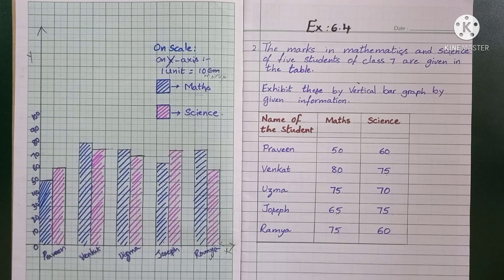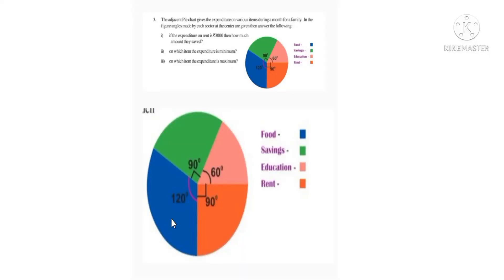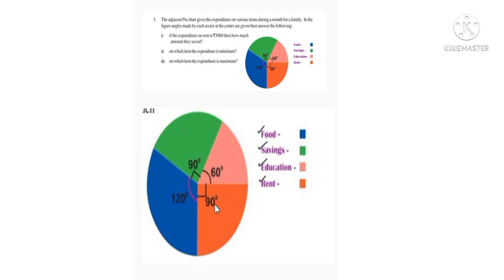Question number 3: the adjacent pie chart gives the expenditure on various items during a month for a family. In the figure, angles made by each sector at the center are given. Different observations are shown in different colors: food is in blue, savings is in green, education is in biscuit color, and rent is in orange-red color.